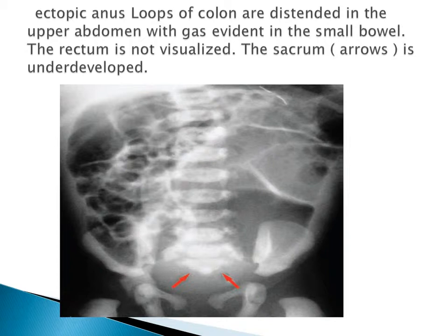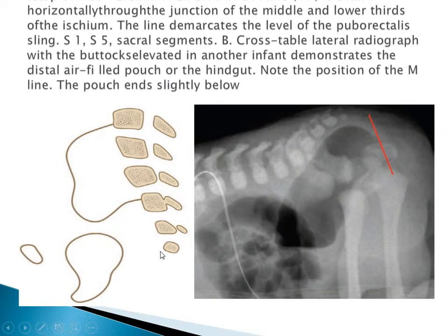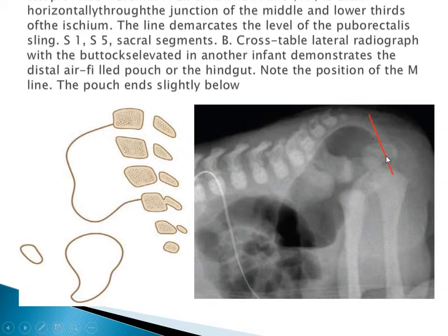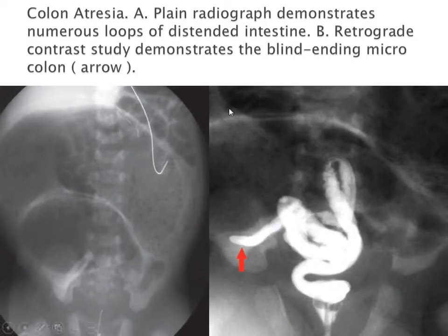Congenital anal abnormality is one cause of obstruction - ectopic anus is one of the commonest causes. Loops of colon extend into the upper abdomen, gas is evident, the rectum is not visualized, and the sacrum is underdeveloped. To determine ectopic anus, we draw the M-line between the upper and mid portion of the ischium - if the rectal pouch is beyond this line, it is most likely ectopic anus. Colonic atresia is an uncommon condition where a plain radiograph demonstrates numerous distended loops and contrast study shows a blind-ending microcolon.